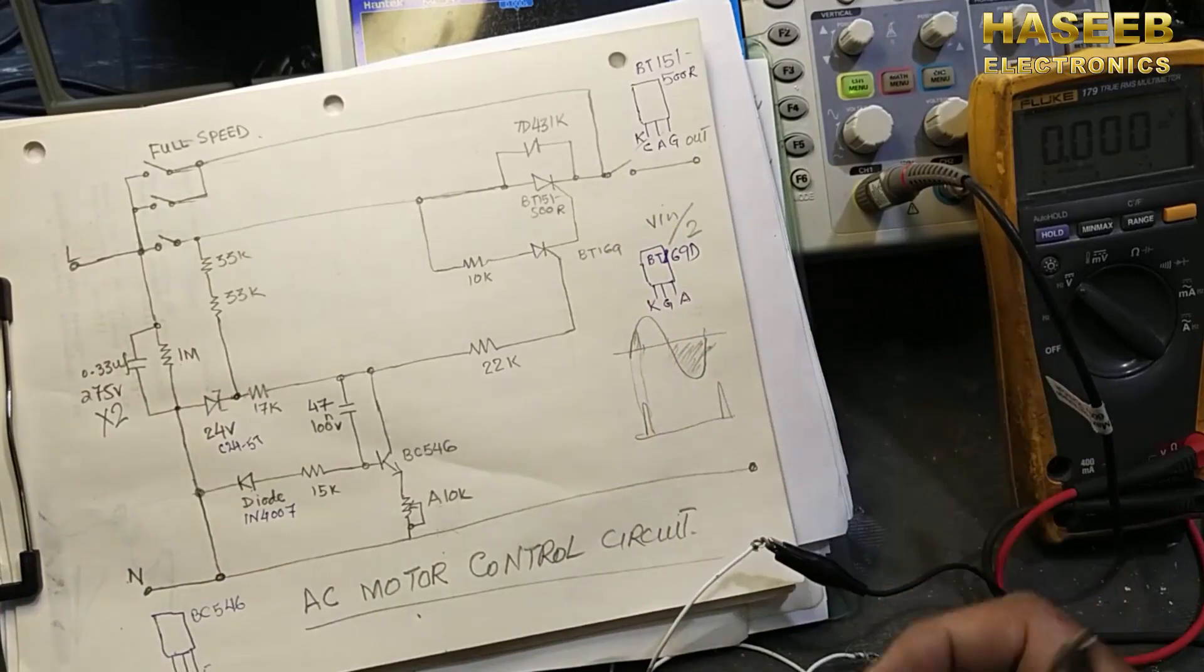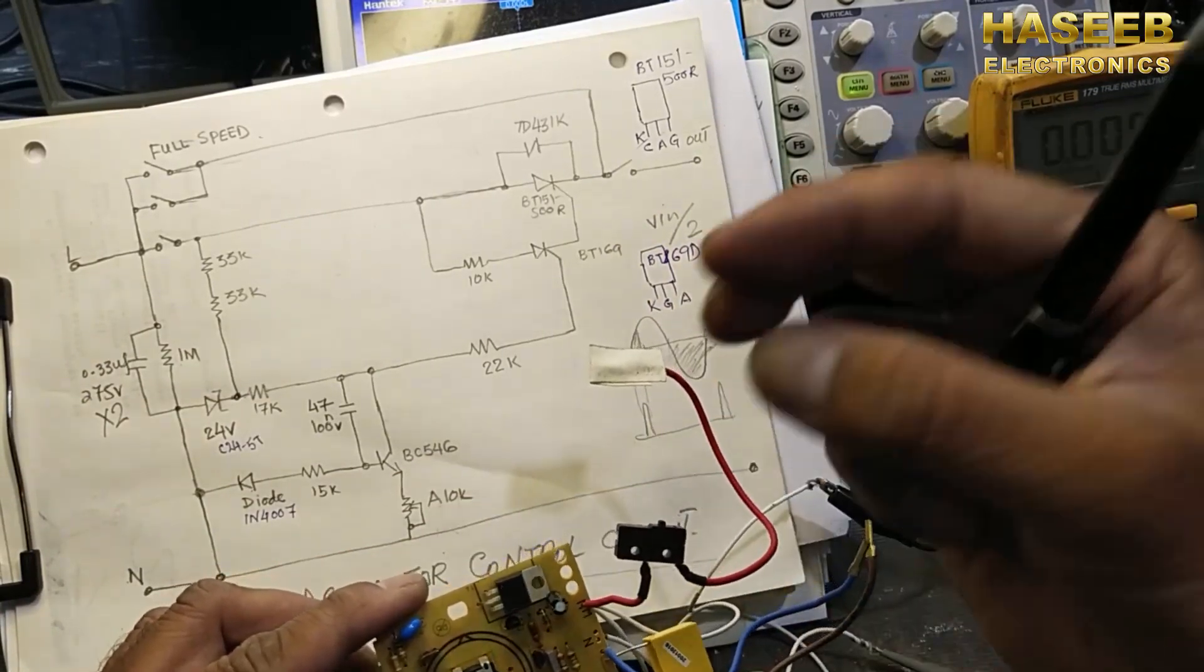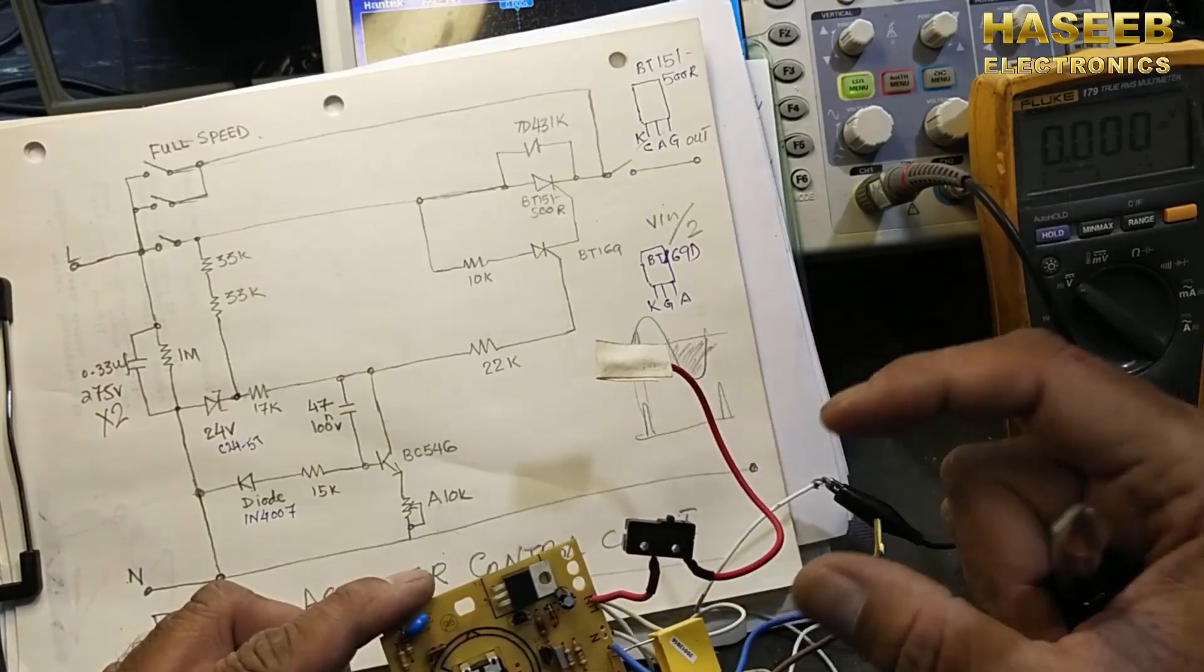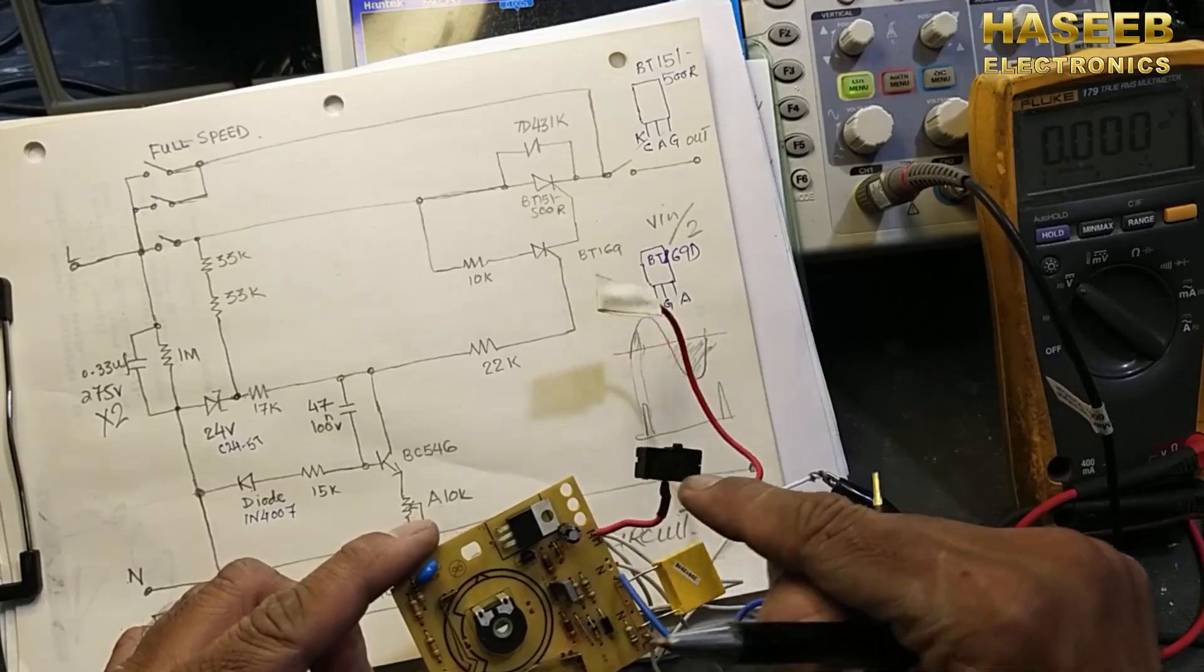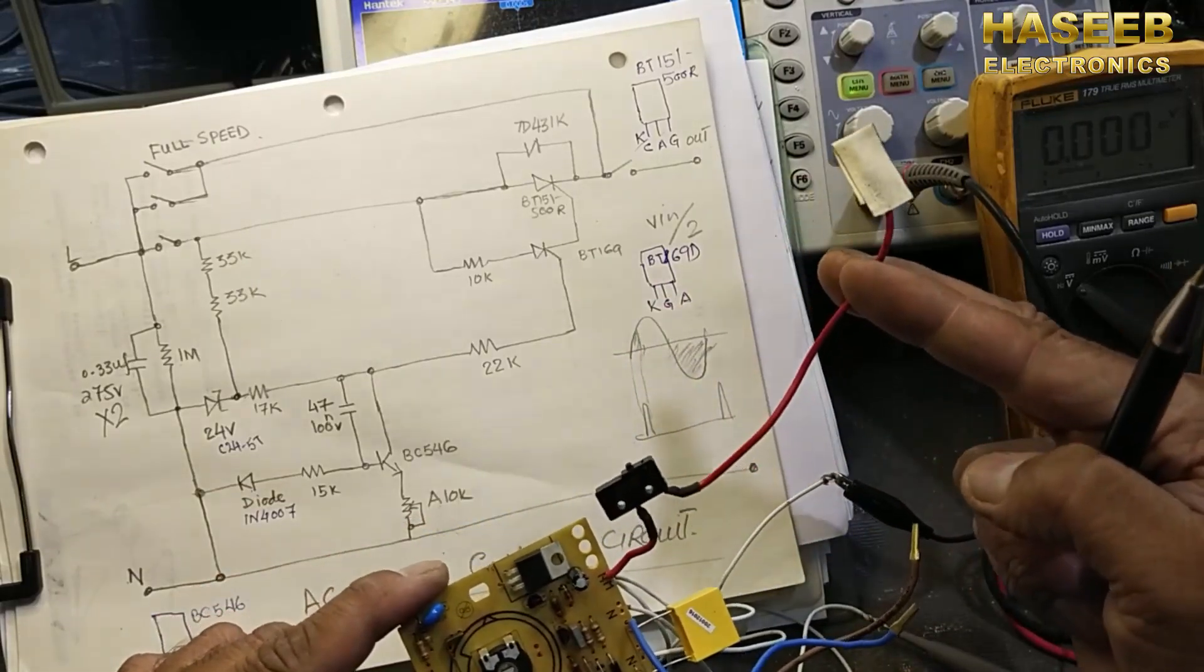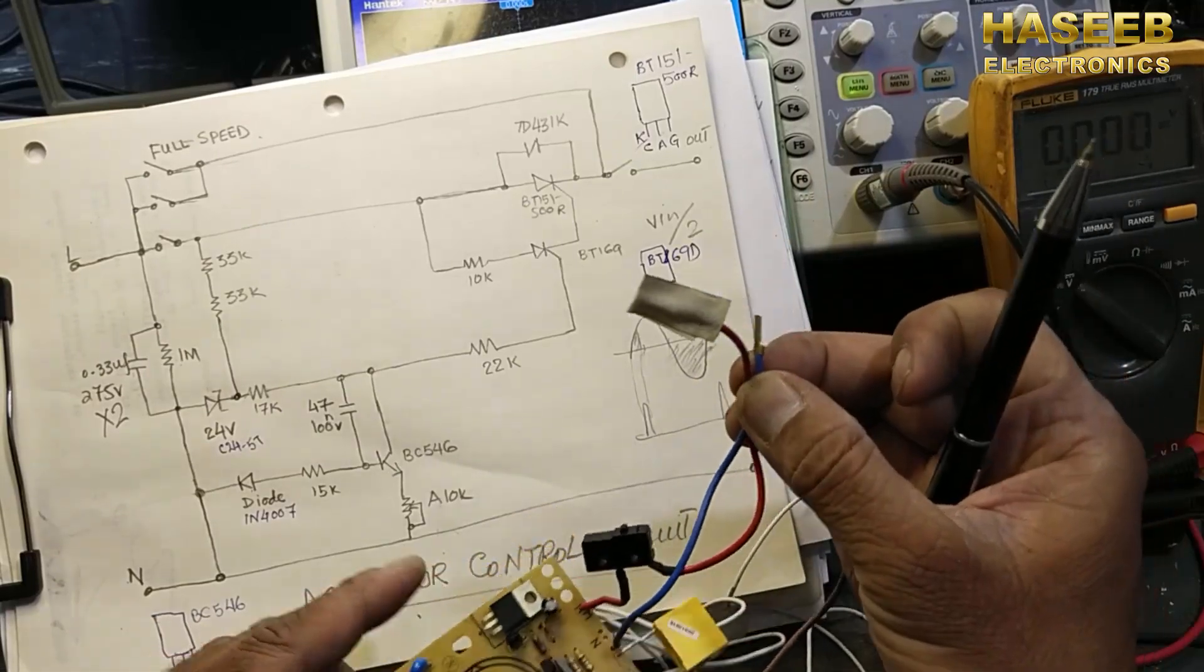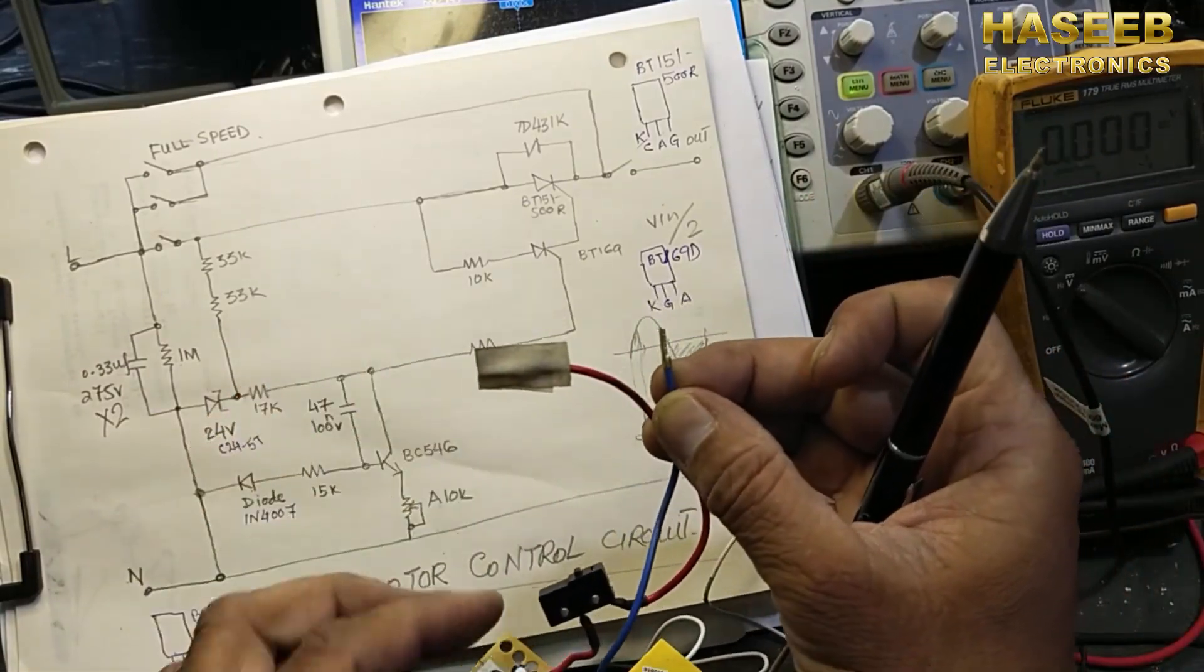And this micro switch here, because it is for a juicer mixer. When we put a jug on the machine, then this switch will make and it will allow to pass voltage to the motor. This is output for the motor.